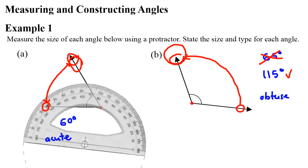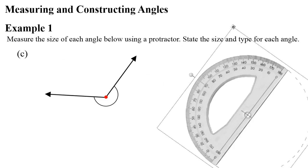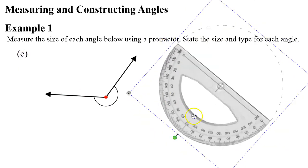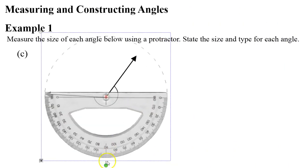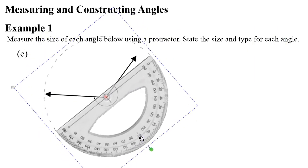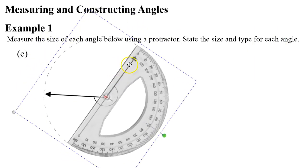All right, let's move now on to question C. This time we're measuring a reflex angle, and we'll start off the same way. This time we actually need to turn our protractor upside down and put our center point on our angle. One edge needs to point to a zero, so we'll make it this arrow.